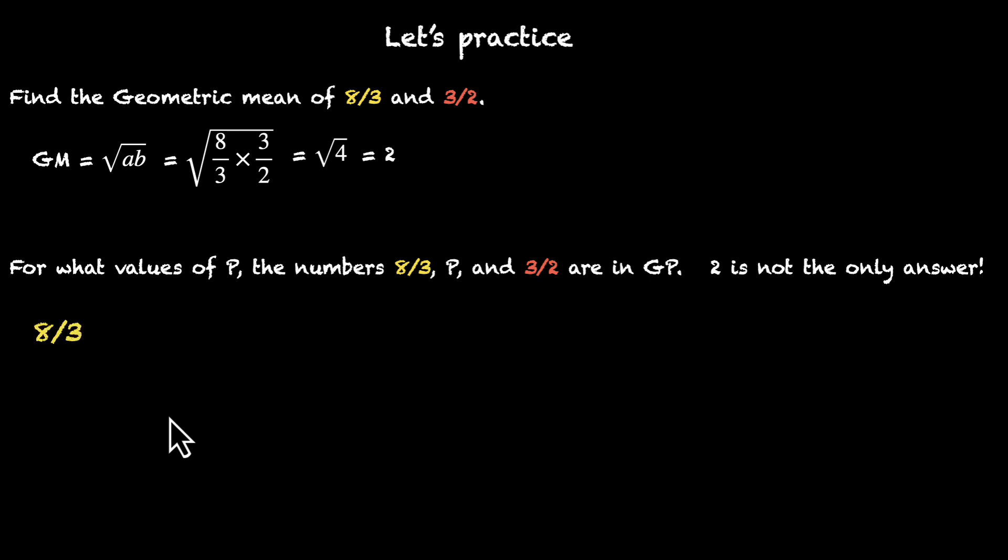We have 8/3 and if you multiply 8/3 by some number, we get to P and if you multiply P by the same number, we get to 3/2. We're calling that number r, some common ratio. Notice that we're saying that these three terms are in GP. We're not saying that P has to be in the middle of 8/3 and 3/2. P could be outside these two and still form a GP. Let's take a closer look.